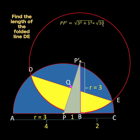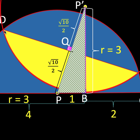Since QP and QP prime are congruent, the measure of QP prime must be one half the measure of segment PP prime. So the length of QP prime must be square root of ten over two, and the length of QP must also be square root of ten over two.